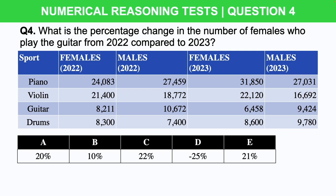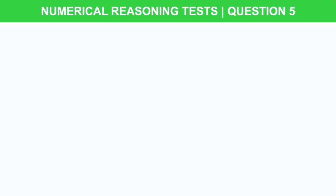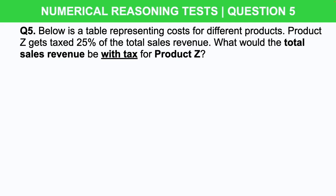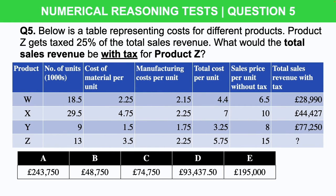Brilliant, you're doing great! How did you get on? Put your answer in the comment section below and I'll get back to you. Question 5 — practice this really well because so many people struggle with the numerical reasoning part of this test. Below is a table representing costs for different products. Product Z gets taxed 25% of the total sales revenue. What would the total sales revenue be with tax for Product Z? Here is that table and here are your answer options. I'm going to give you 30 seconds on the timer starting now.